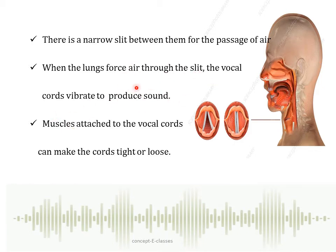For example, if you are trying to speak, the vocal cords come together leaving a very narrow gap. When the lungs force air or when air is exhaled, it causes the vocal cords to vibrate and produce sound. If you are not speaking, the vocal cords are apart from each other. Muscles attached to the vocal cords can make them tight or loose. If the vocal cords are tight and thin, the quality of voice is different from when they are loose and thick.